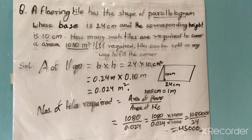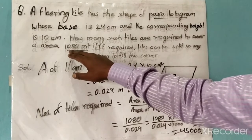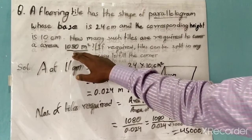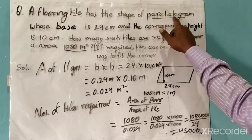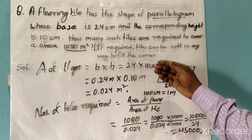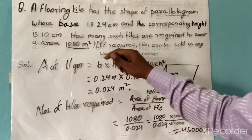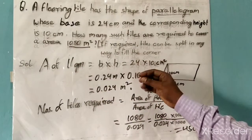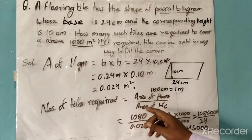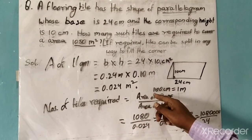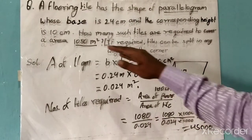Let's revise the question. We were asked how many tiles are required to cover an area of 1080 square meters, where the shape of each tile is a parallelogram. First, we converted the tile dimensions into meters because the floor area is given in meters. Then we found the area of the tile, and finally divided the floor area by the tile area to get the number of tiles required.